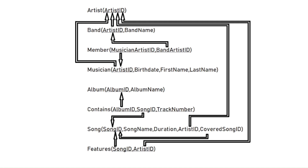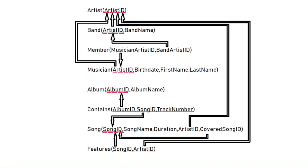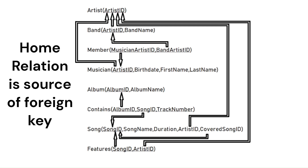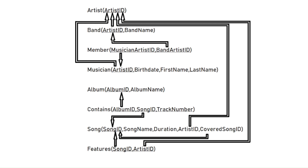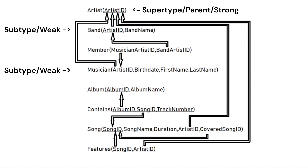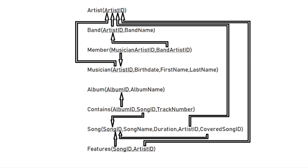Here is the version with arrows. Each foreign key has an arrow pointing to the primary key that it is the foreign key for. The table with the primary key is the home relation for the foreign key. We see that many tables have artist ID as a foreign key. The subtypes band and musician are actually weak entities with respect to the strong artist entity. Interestingly, the artist ID that they use as a foreign key is also their own primary key.